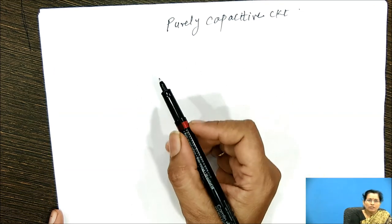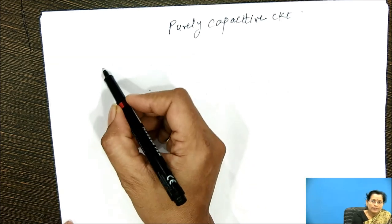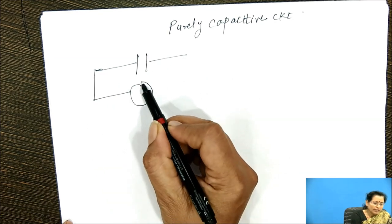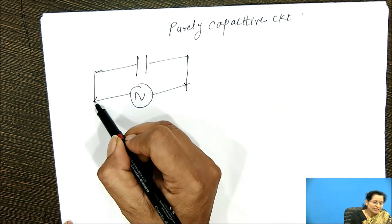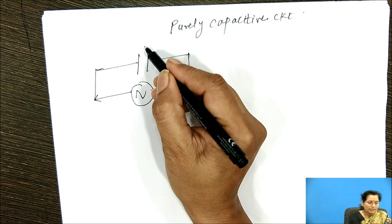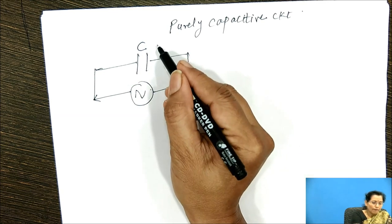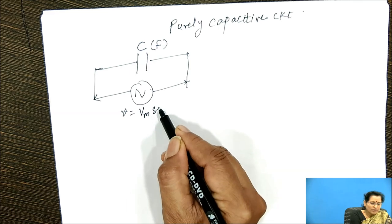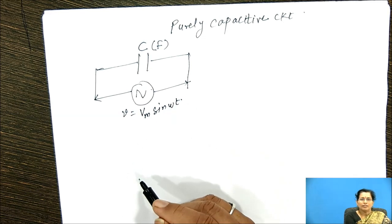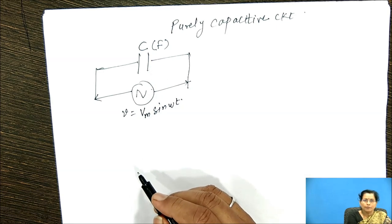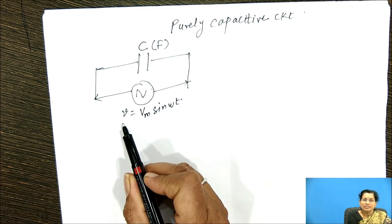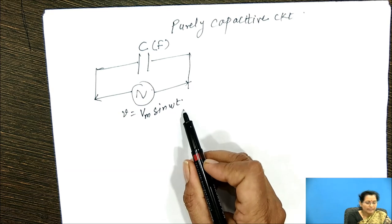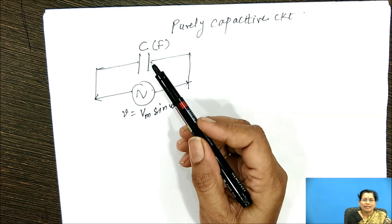A purely capacitive circuit means one capacitor connected to AC supply. The AC supply is connected to this capacitor, C is the capacitance in Farads. This AC voltage V equal to Vm sin omega t is connected across this capacitor, where V is the instantaneous voltage, Vm is the maximum voltage, omega is the angular frequency, and t is the time.